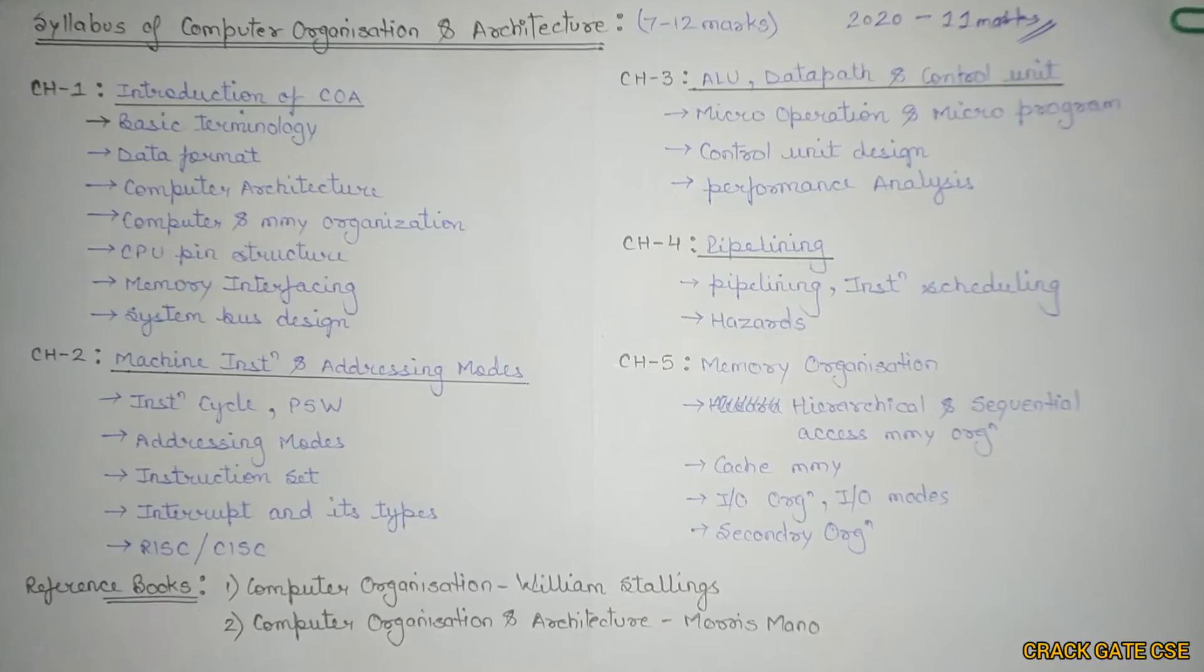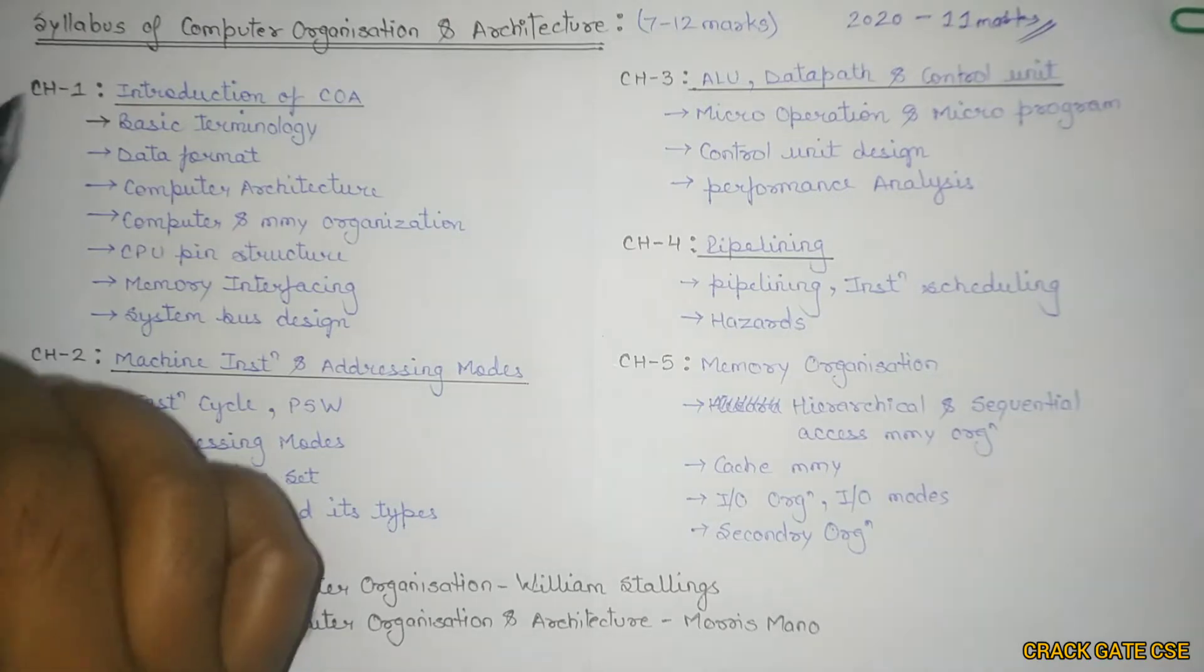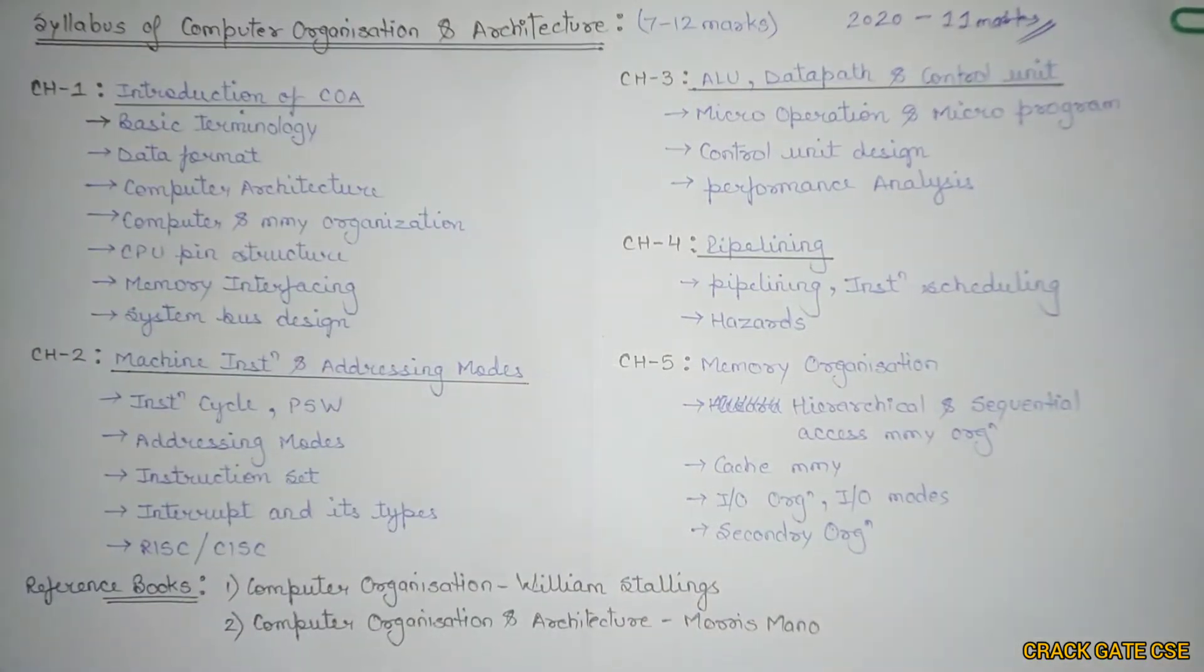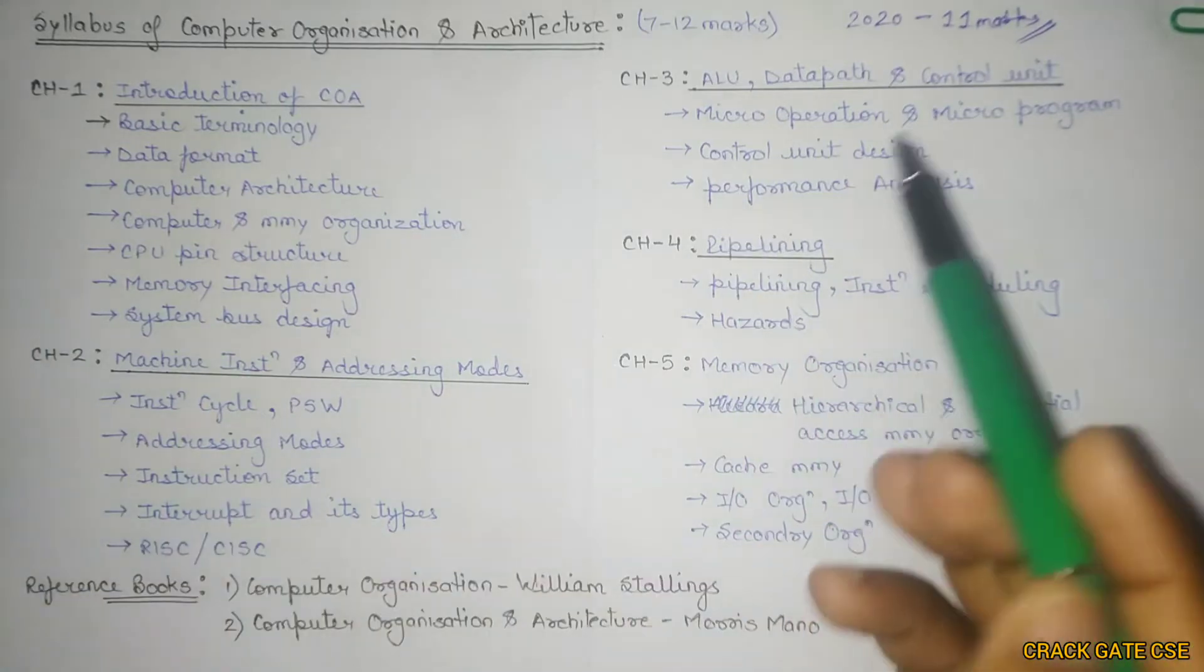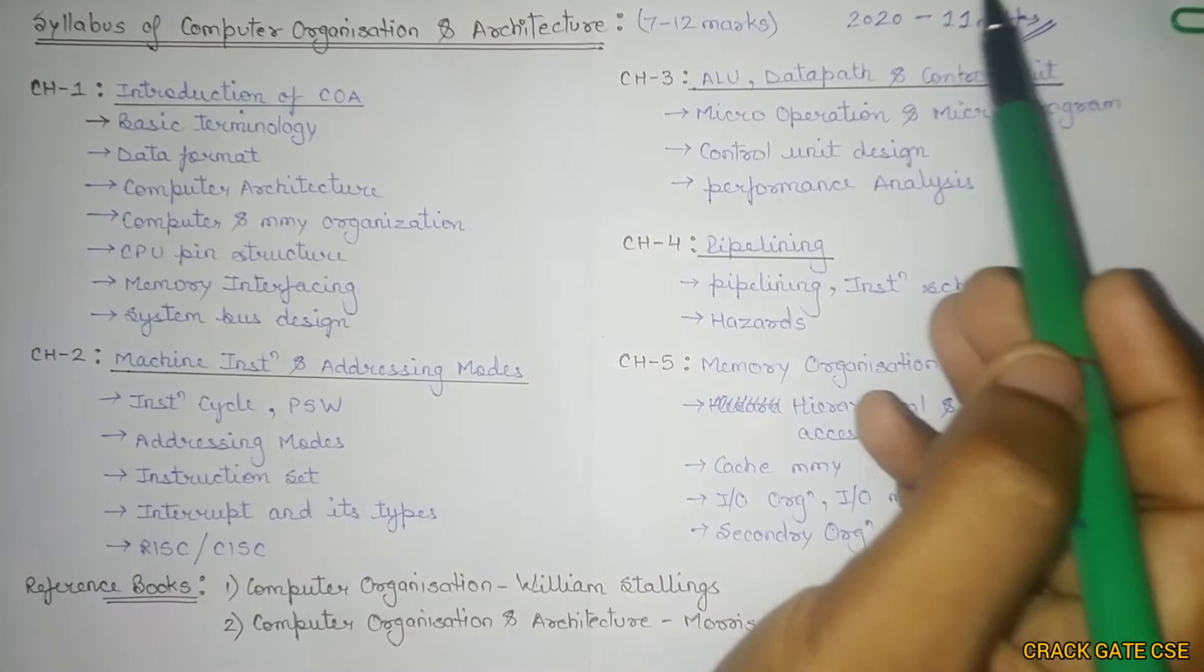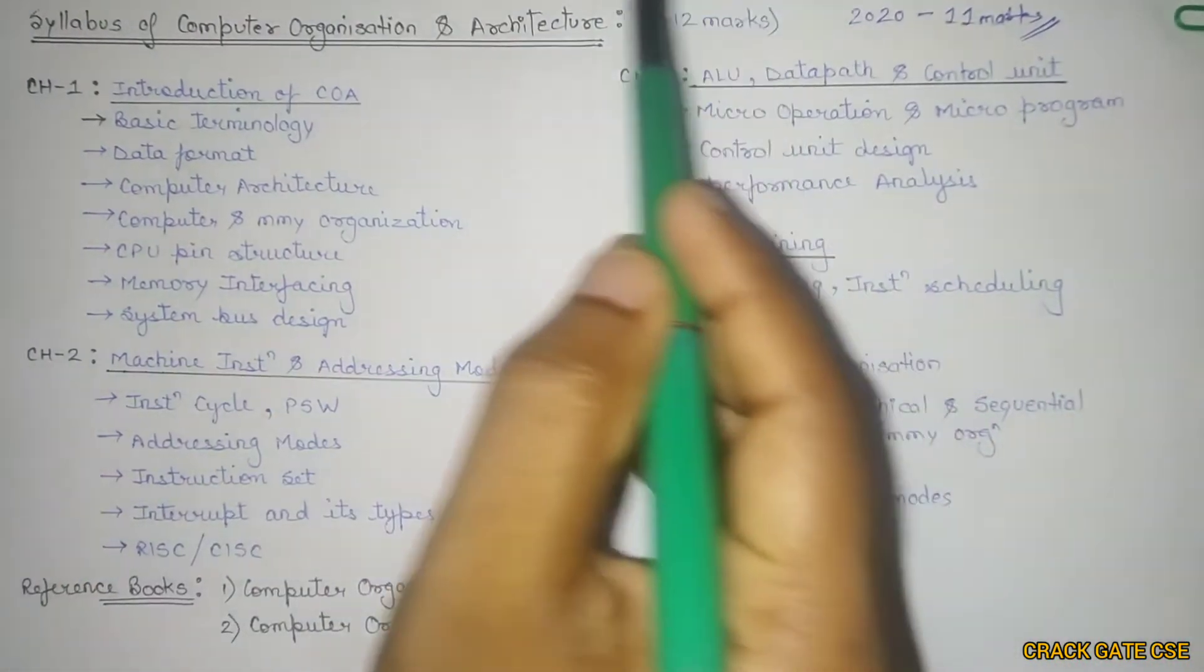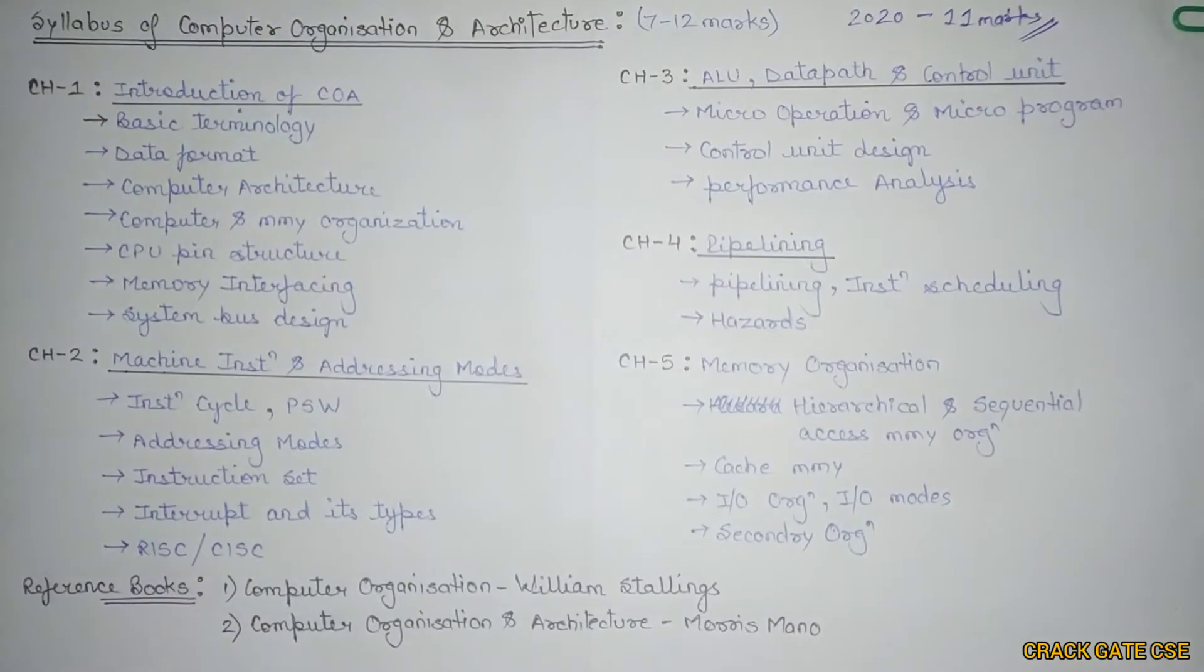Hello friends, welcome to CrackKid CSE. In this particular video, we'll be understanding the syllabus of Computer Organization and Architecture in a detailed manner. This is a subject with good weightage. In 2020 itself, questions from this subject came for around 11 marks, and the average weightage is 7 to 12 marks.